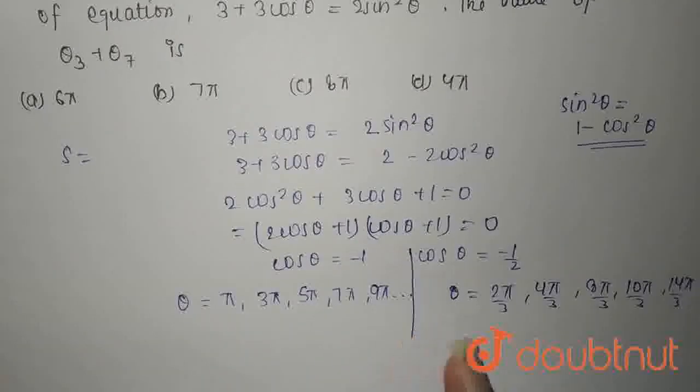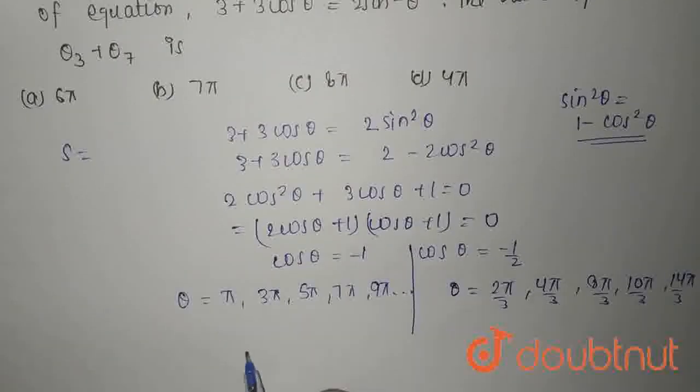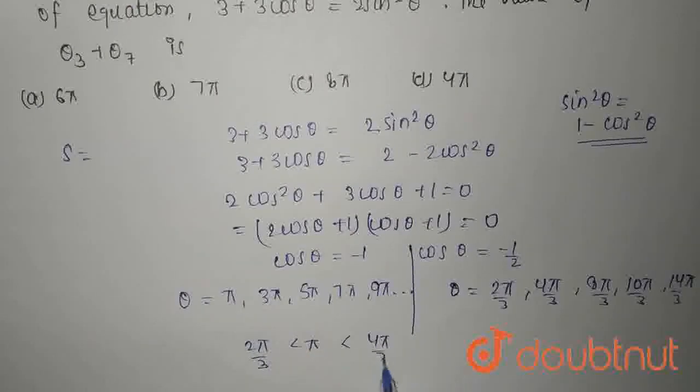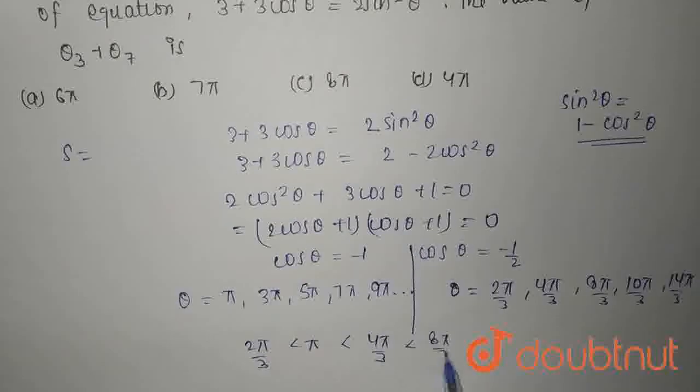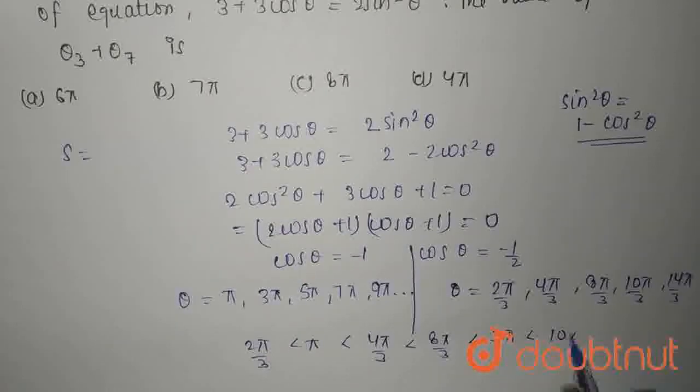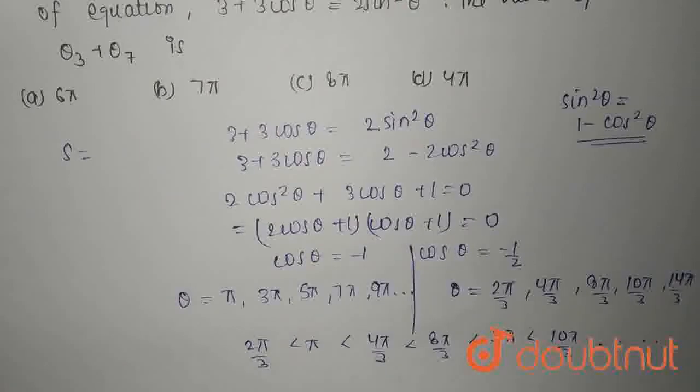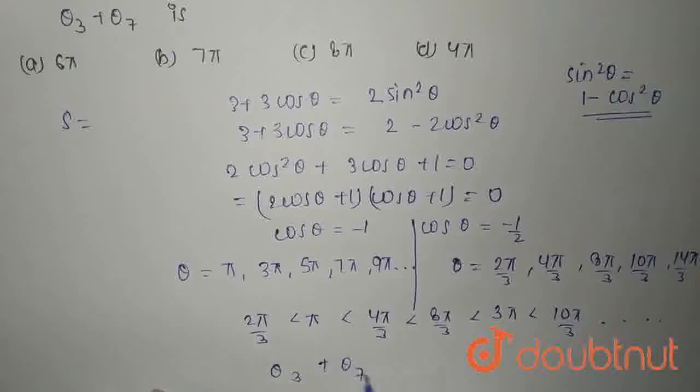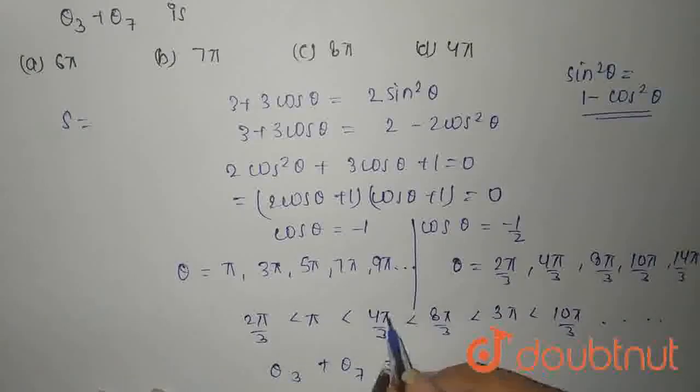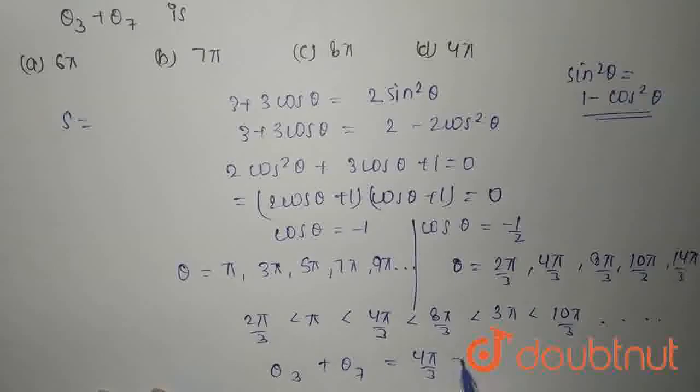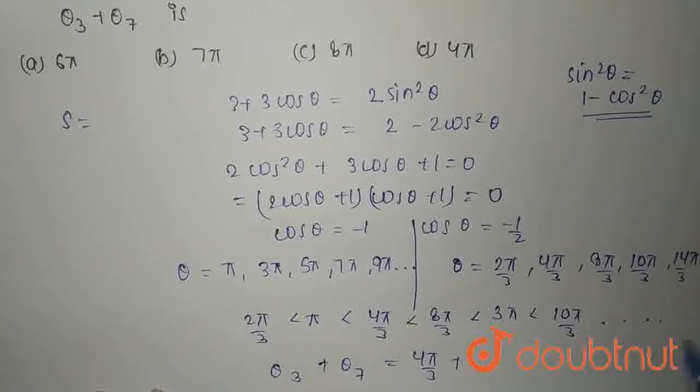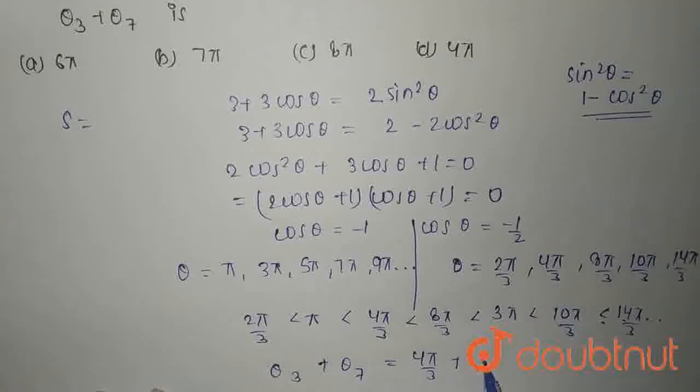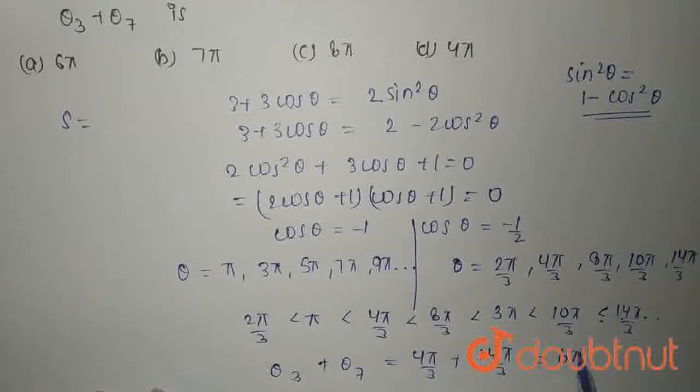The solutions in increasing order are: 2 pi by 3, which is less than pi, which is less than 4 pi by 3, which is less than 8 pi by 3, which is less than 3 pi, which is less than 10 pi by 3 and so on. So, theta 3 is 4 pi by 3, and theta 7 is 14 pi by 3, which gives us 6 pi.